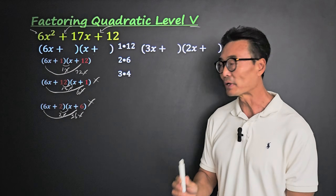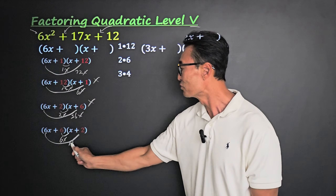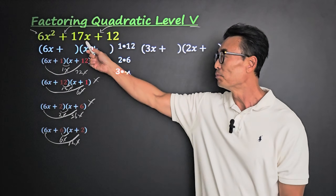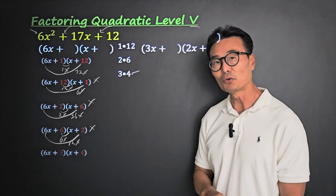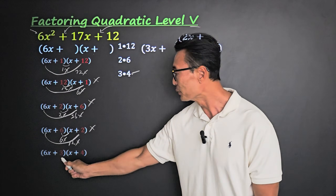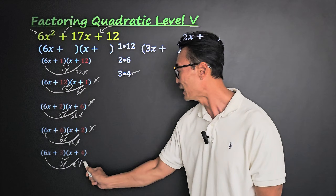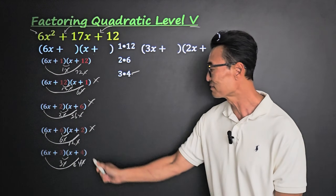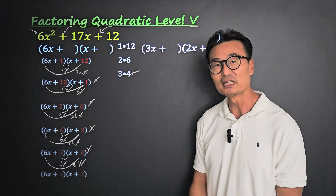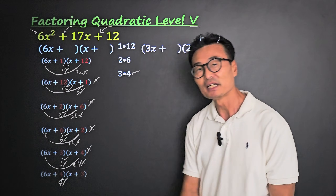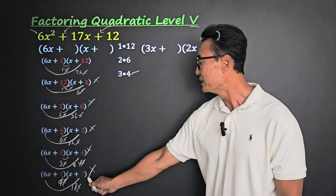Trying 3 and 4 with 6x and x: inner gives 3x, outer 6 times 4 is 24x, totaling 27x — not 17x. Switching to 4 and 3: inner gives 4x, outer 6x times 3 is 18x, giving 22x — not it. So 6x and x does not work. Now let's try 3x and 2x.